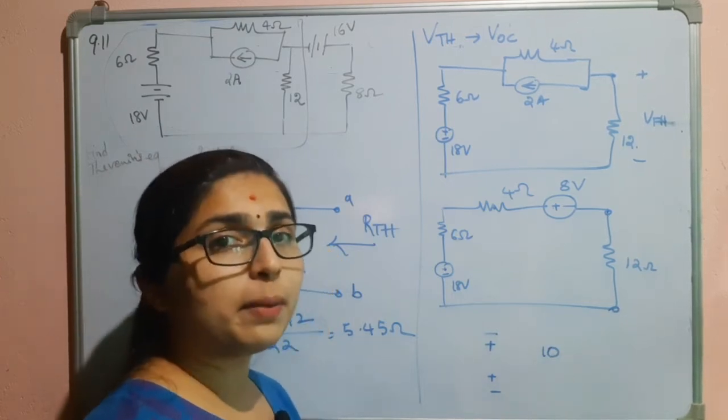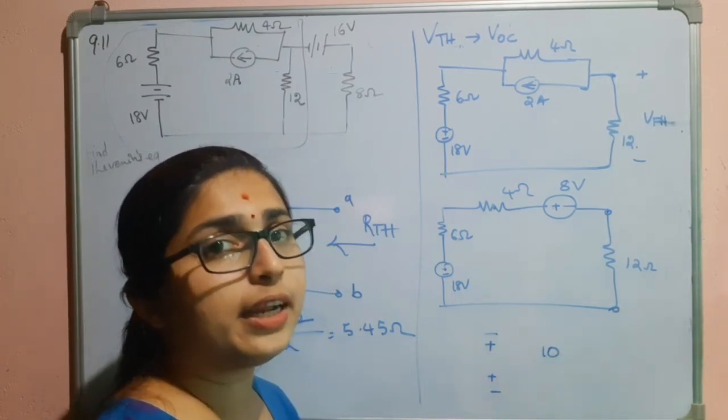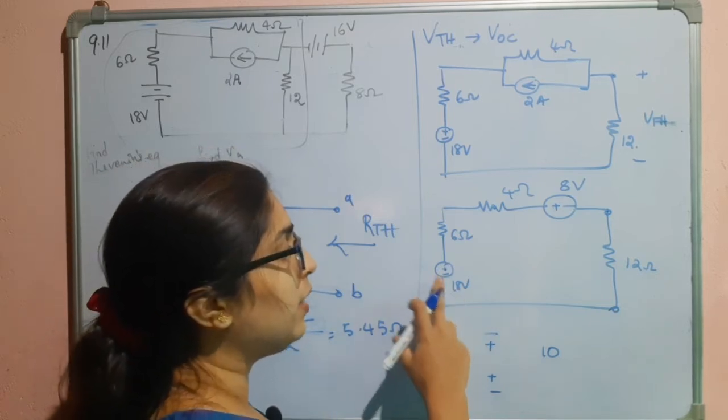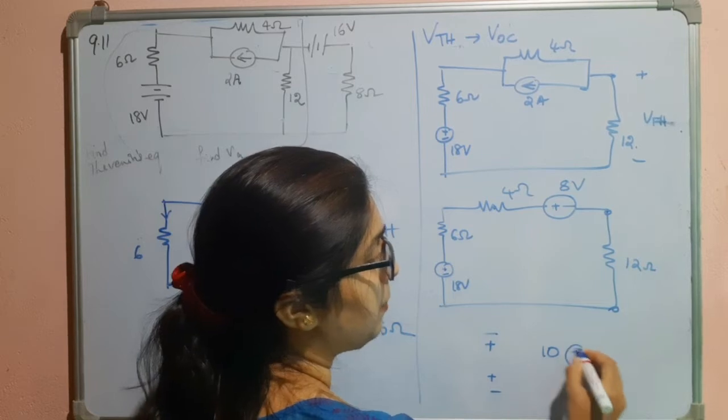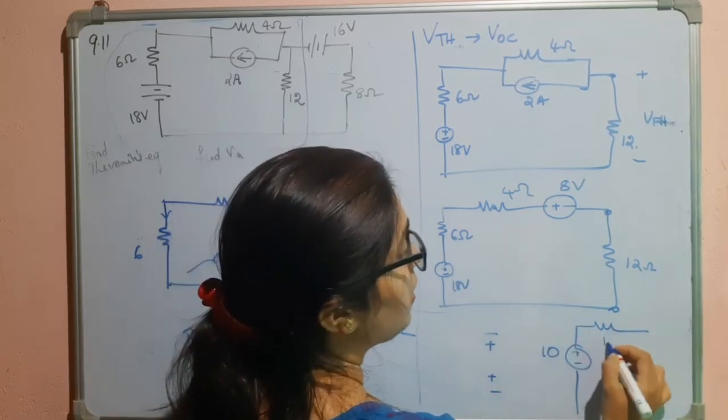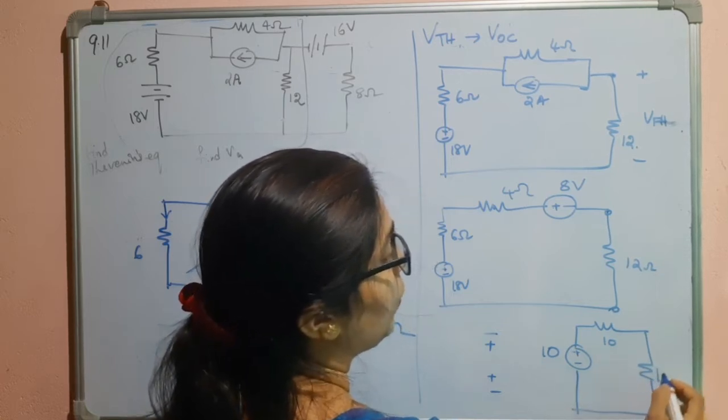Then, what will be the polarity of the resultant voltage source? It will be of the larger magnitude source. So, larger magnitude is 18 volts. So, it will be plus minus. Then, 6 and 4, they are in series. So, I will take this as it is. And here, once again, we have 12.